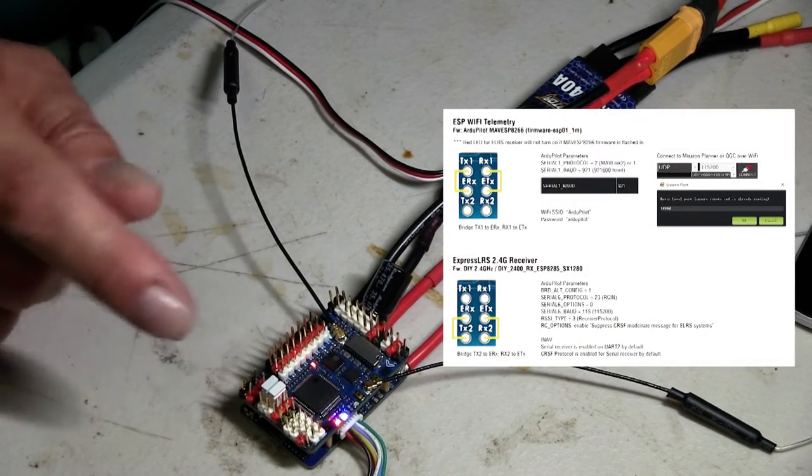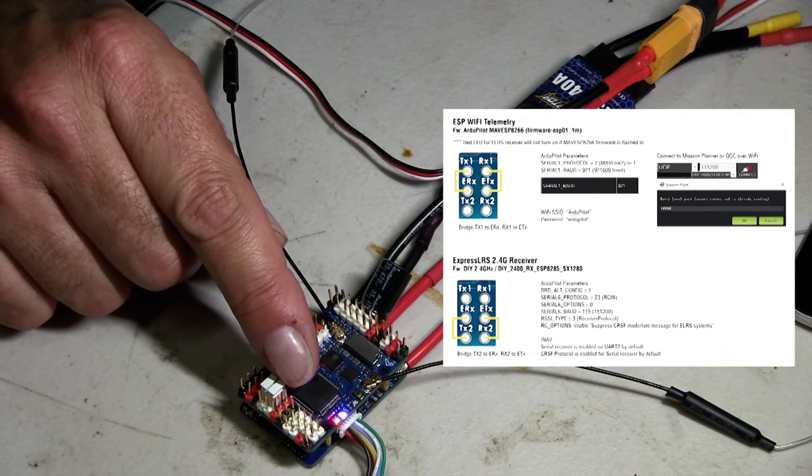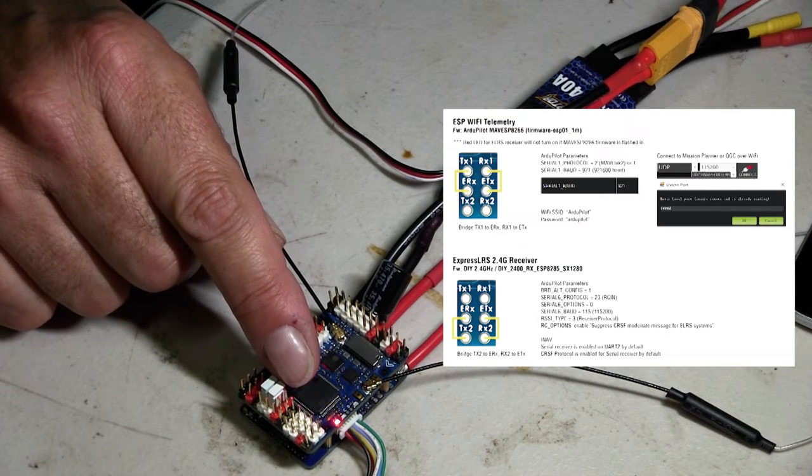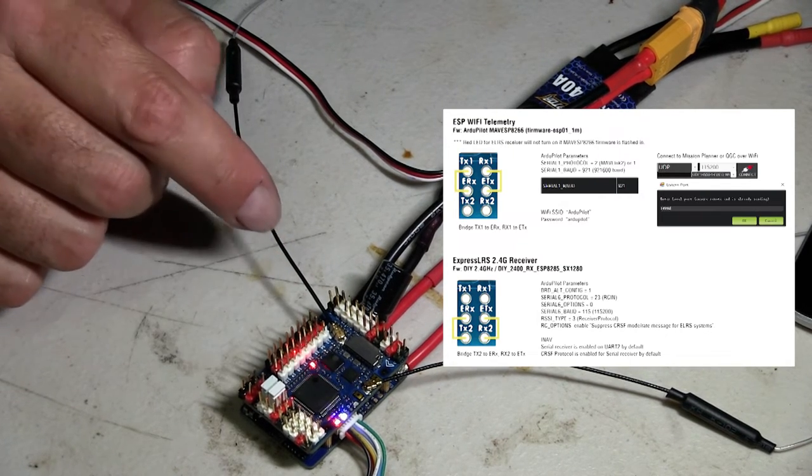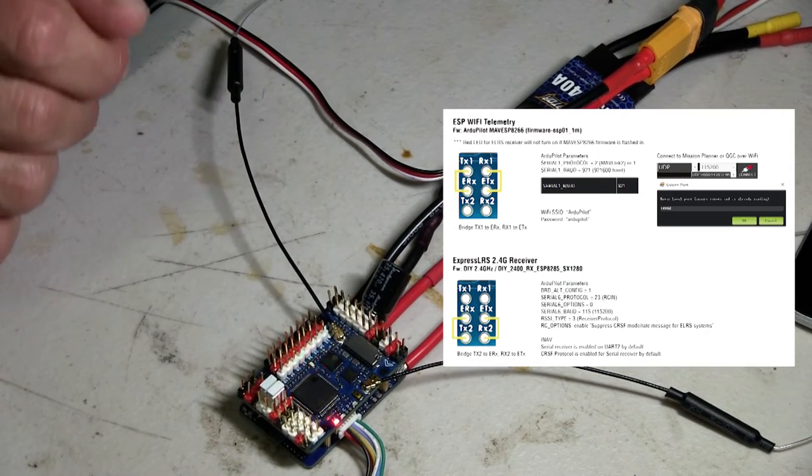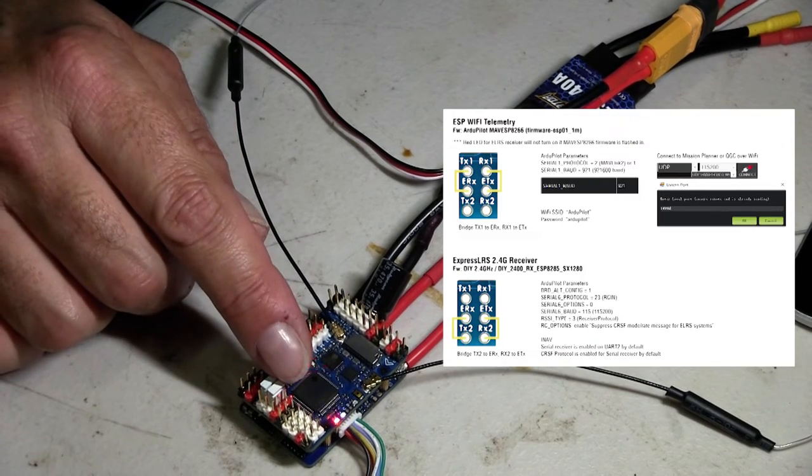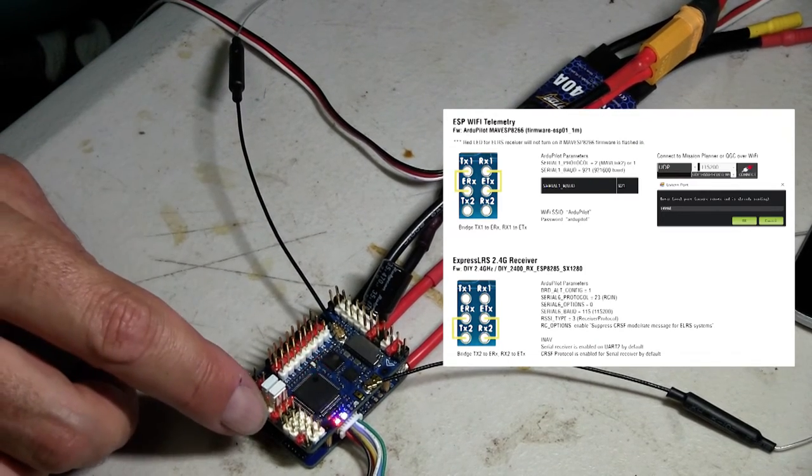So you've got these jumper plugs. Where I've got them situated here I'm assuming turns off the 2.4 RX and will activate the Wi-Fi telemetry. If you want the RX these have to be put to the bottom pins here.